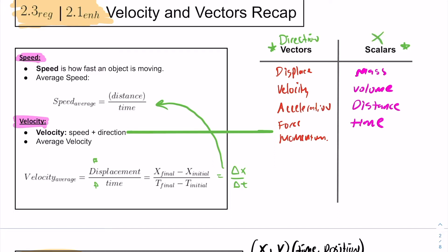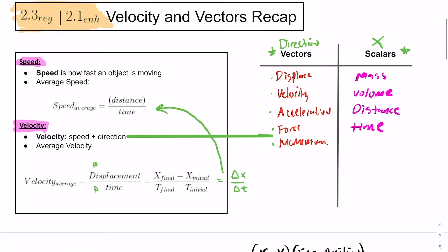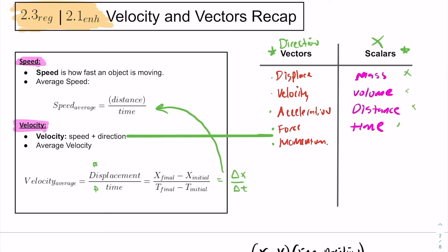So our vectors, we have displacement for length, velocity, acceleration is the rate at which velocity changes. Force is responsible for getting acceleration to begin with. Momentum, we'll see at the end of the semester, is mass times velocity. Scalars have no directional information: mass, volume, distance, time.